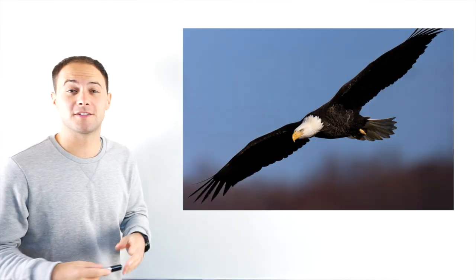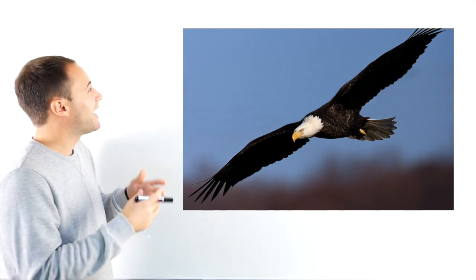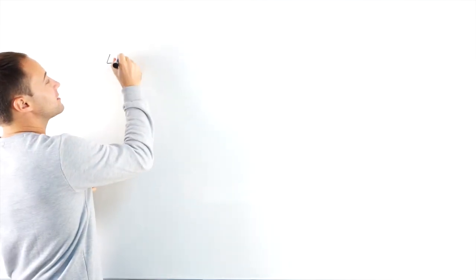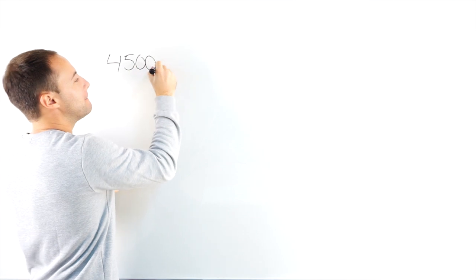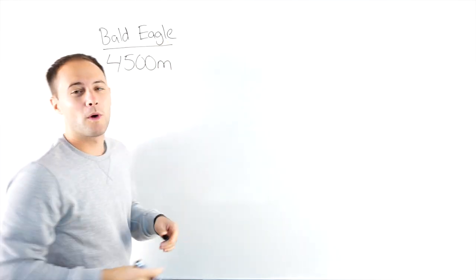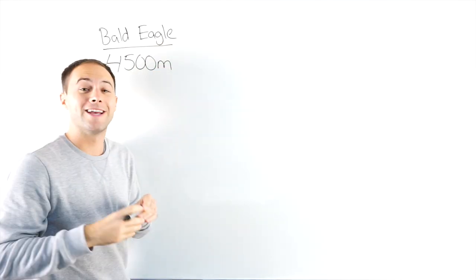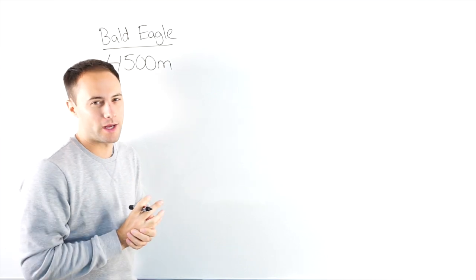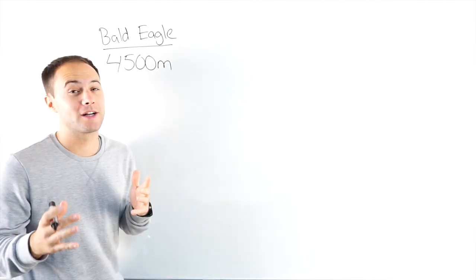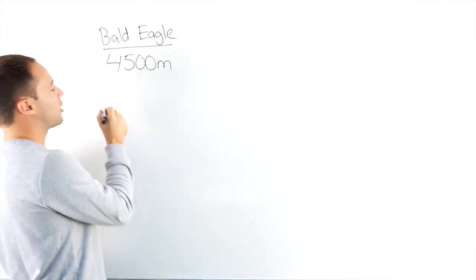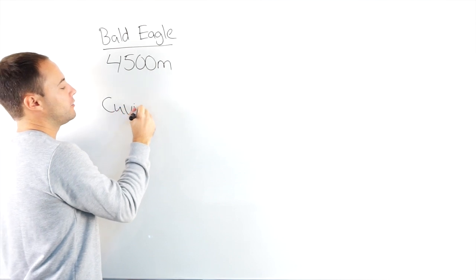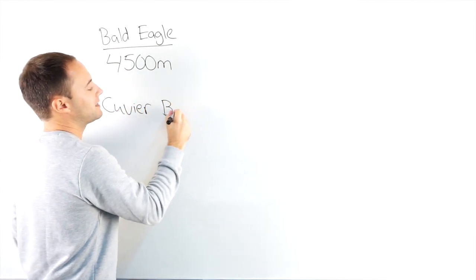Which animal can travel farther away from sea level, a bald eagle or a whale? Let's try to figure this out. Bald eagles have been seen gliding at heights of up to 4,500 meters above sea level. What about the whale? Well, it all depends on the type of whale, and the whale we're going to talk about today is called the Cuvier beaked whale.